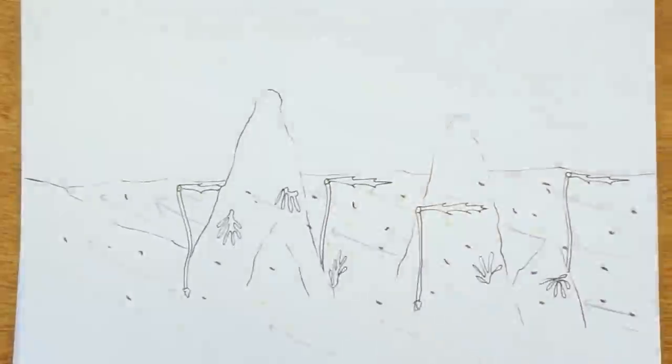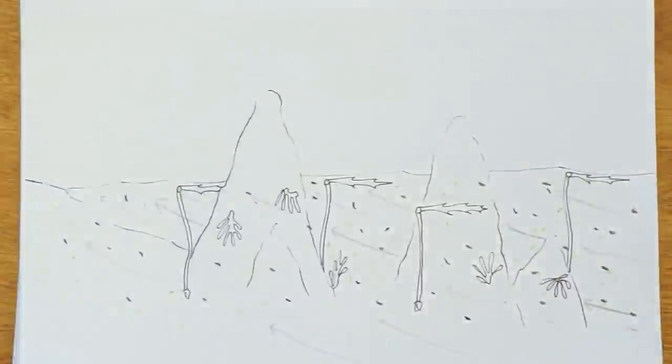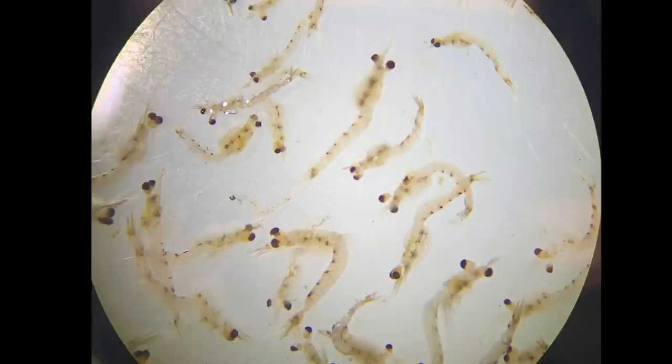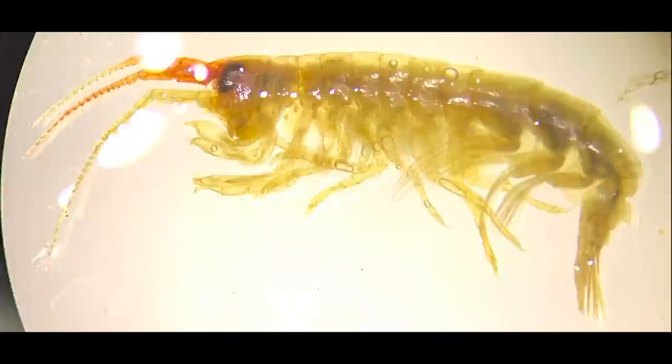Feeding on the phytoplankton, you can find zooplankton, which are actually many different types of animals. They can be mysid shrimp, amphipods, larvae of larger animals, or many other species.